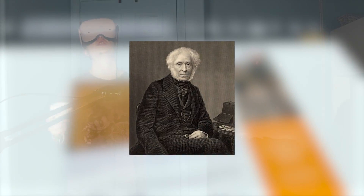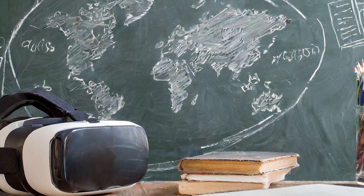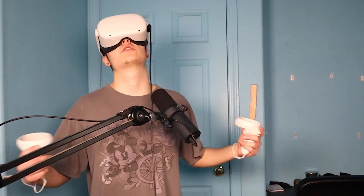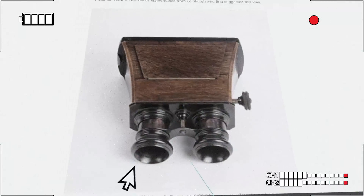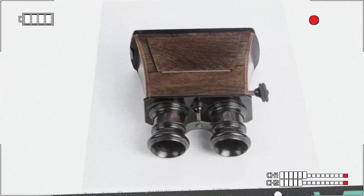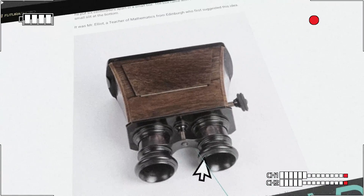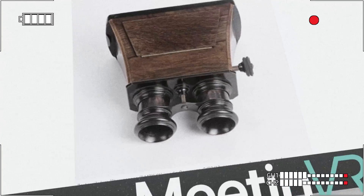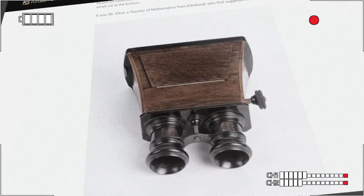David Brewster built off of what Sir Charles had created and made a way better version of these binoculars. First, he added two lenses instead of the silver plating. But he didn't just add them randomly — he separated them by exactly 6 centimeters. This allowed the viewer's eyes to adjust to the photo way easier than a blurry image.